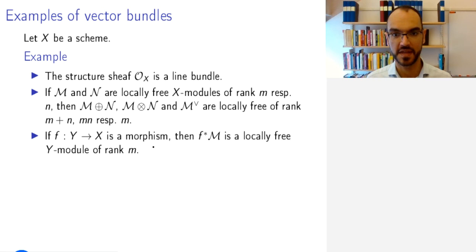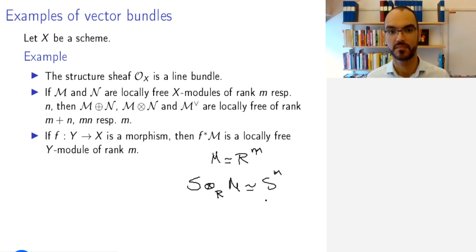If you have a morphism of schemes, then the pullback of a locally free sheaf of modules is locally free of the same rank. And the reason for that is, working on an affine setting, if M is isomorphic to some ring R to the power N, then tensoring S over R, this is S to the power N as an S module. What happens with the push forward? That is for you to think about.